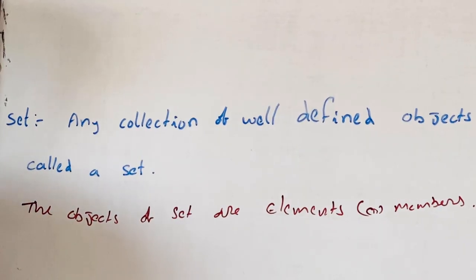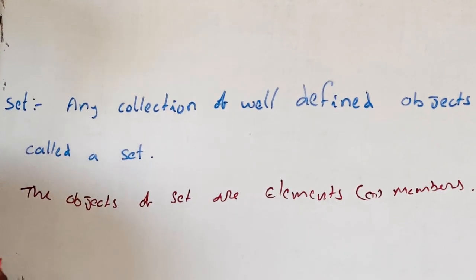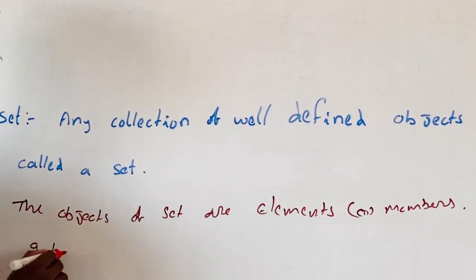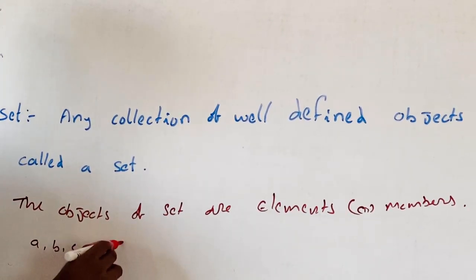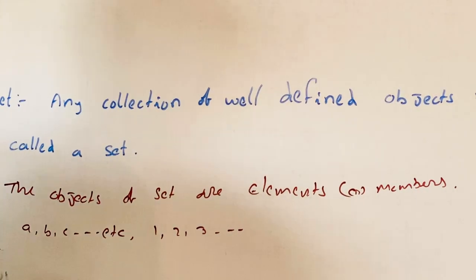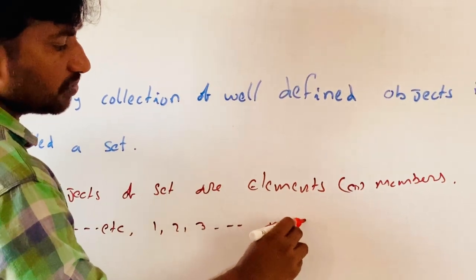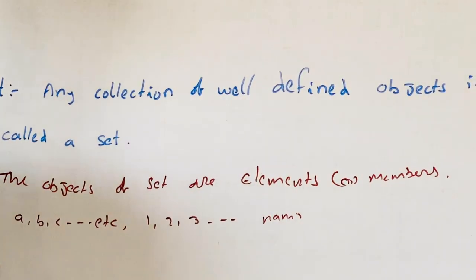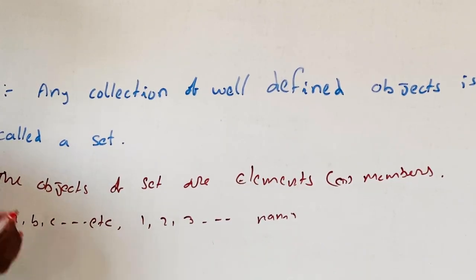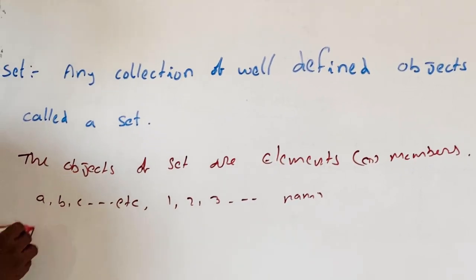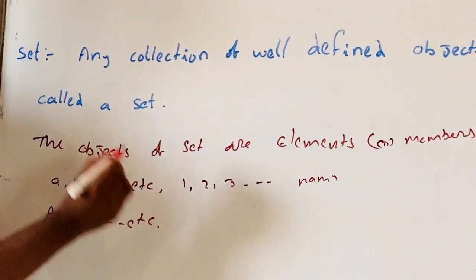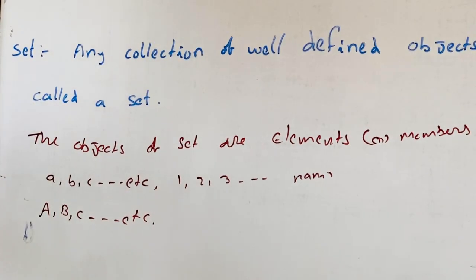Generally, elements are represented by small letters such as a, b, c, and so on — or numbers 1, 2, 3, etc. — or names like river names, months names, and so on. Sets are generally denoted by English capital alphabets, for example A, B, C, and so on.